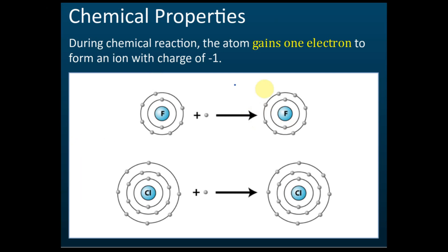Since it receives only one electron, the charge becomes negative one. Chlorine is the same — it has seven valence electrons, and after adding this electron it has eight electrons. That is how Group 17 elements react: they react by receiving electrons from other atoms.